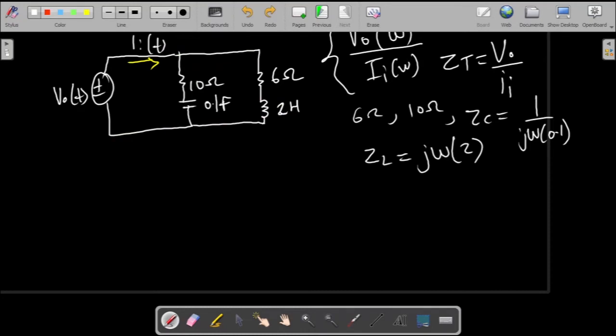So you just have to find the parallel combination of each. We can first collapse, just make the branches into single impedances. This first impedance over here would be the sum of these two in series, and the second one here would be the sum of these two in series as well.